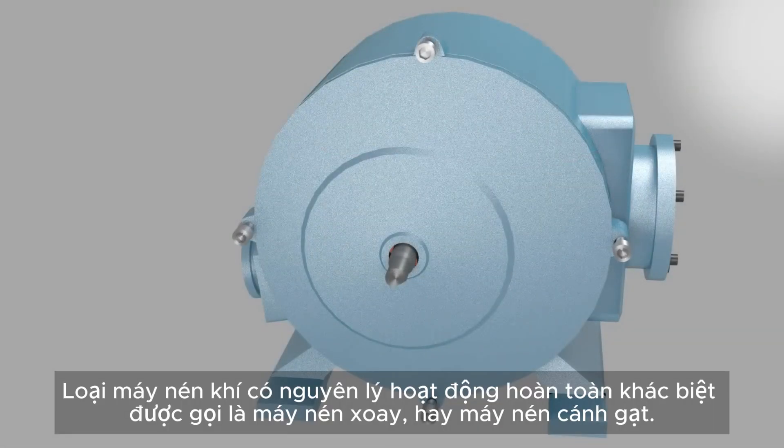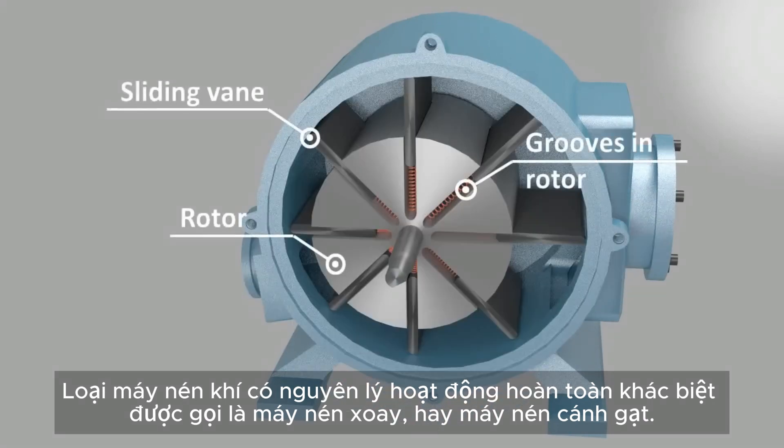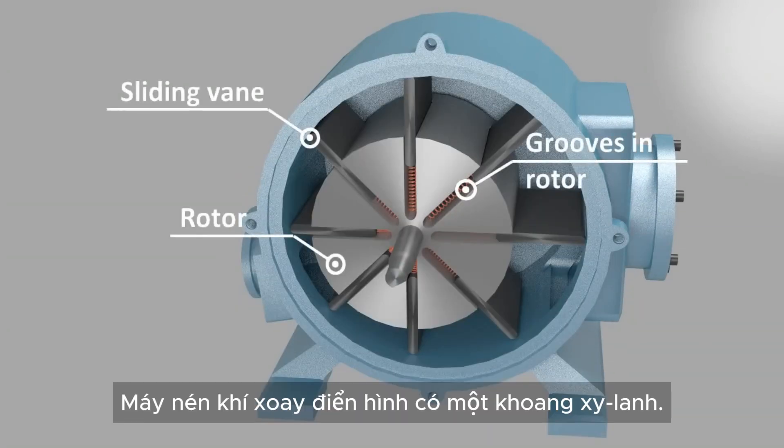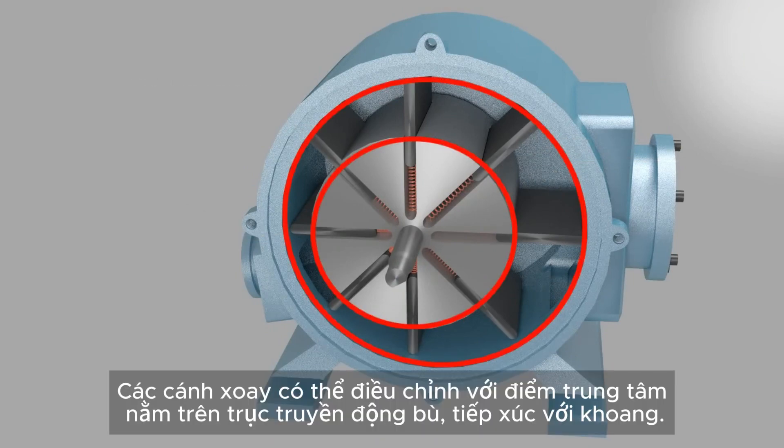A totally different working principle has the so-called rotary compressor, also named as vane compressor. The typical rotary compressor has a cylindrical housing. Adjustable rotary vanes, with its center point on an offset drive shaft, have contact with the housing.